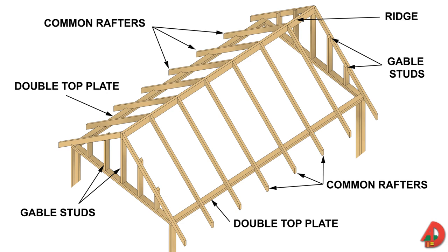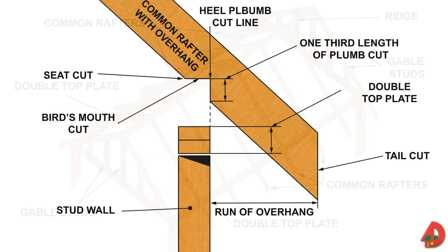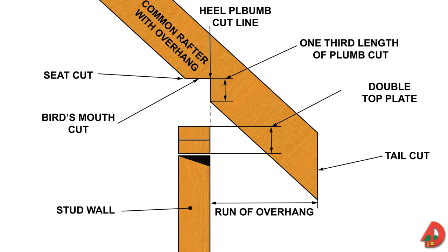Gable studs are upright framing members that provide nailing surface for siding and sheathing at the gable ends of the roof. Common rafters extend from the top wall plates to the ridge. All common rafters for a gable roof are the same length and can be pre-cut before the roof is assembled. Most common rafters include an overhang, which is the part of a rafter that extends past the building line to the tail cut of the rafter.